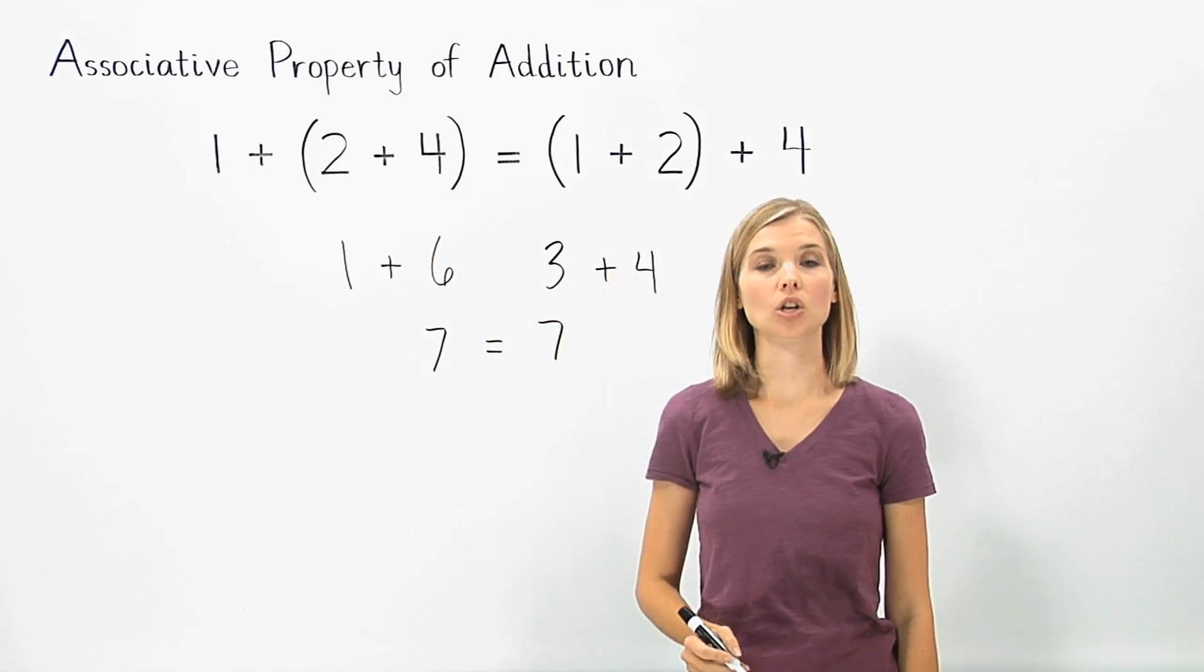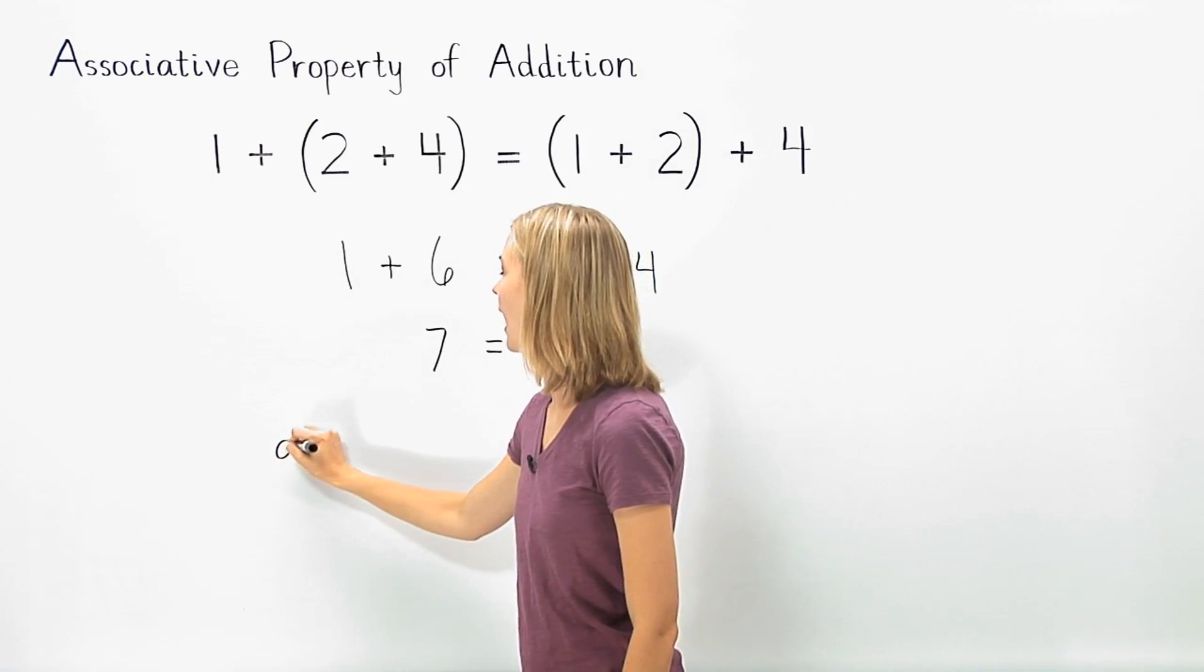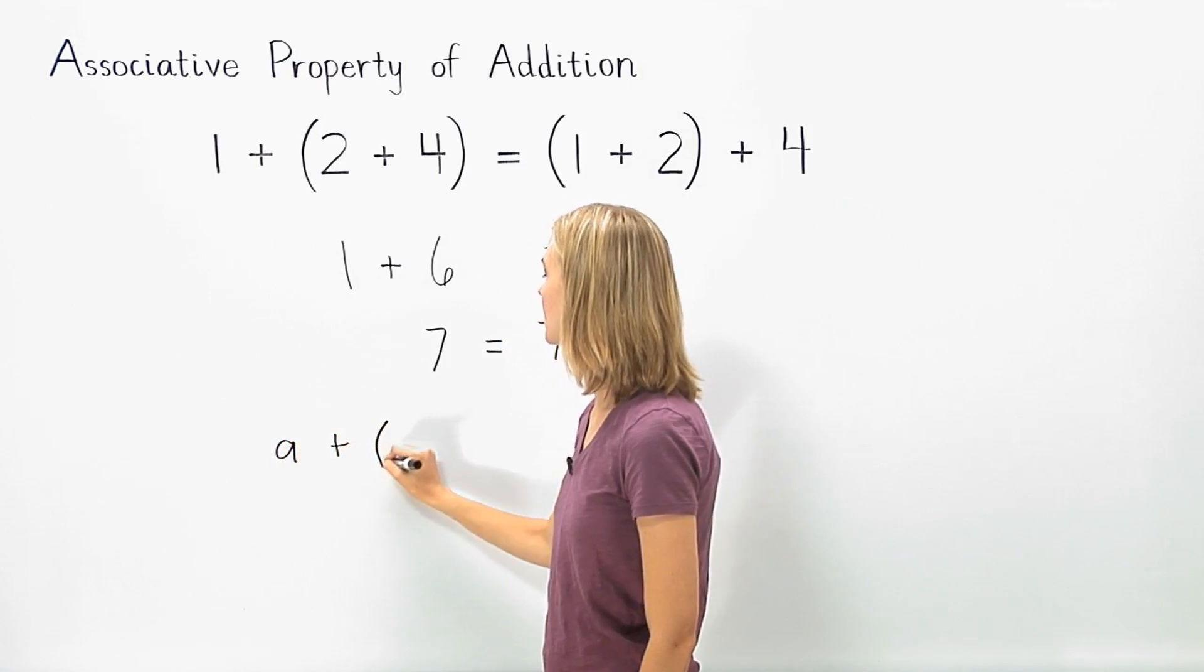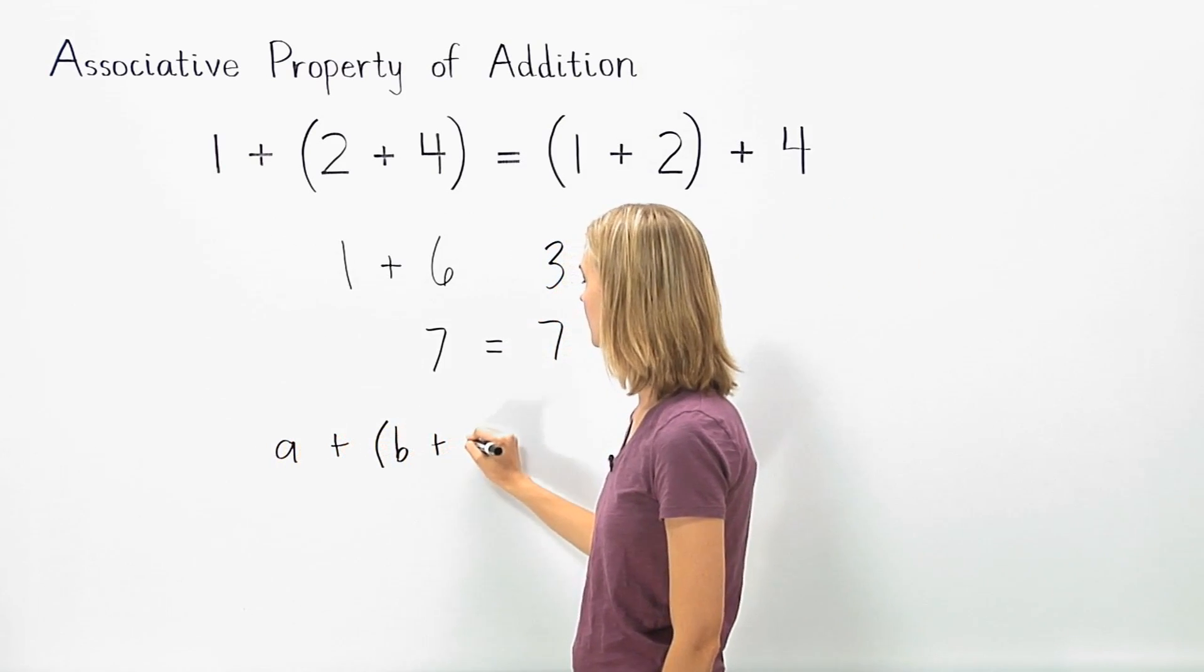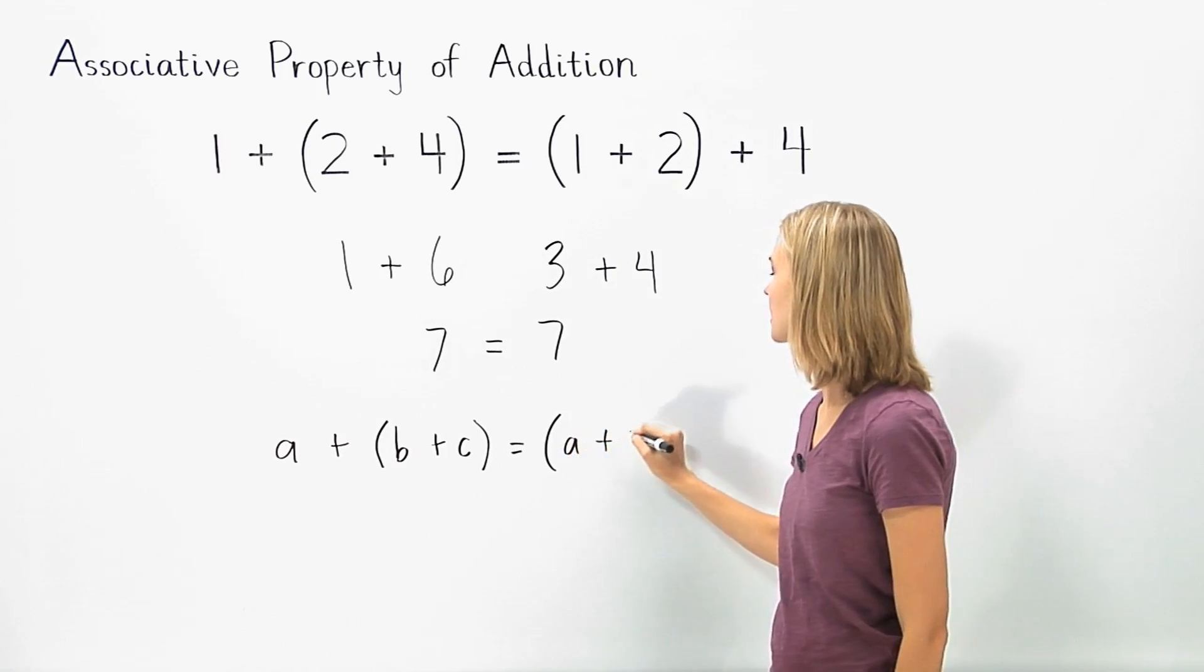In general terms, the associative property of addition can be written as a plus parentheses b plus c equals parentheses a plus b